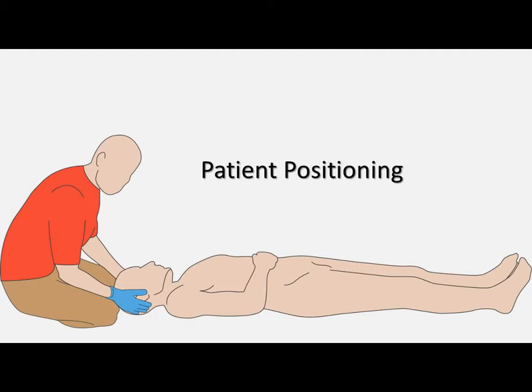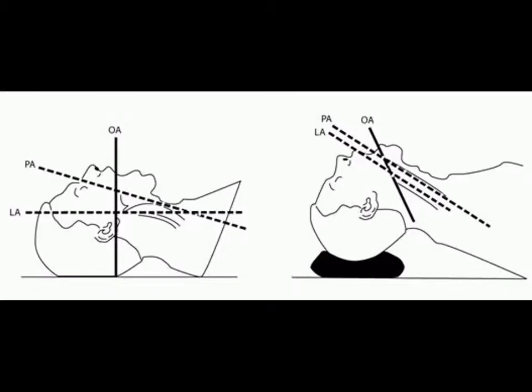We're now going to look at how we can position Millie in order to maximize our chance of success on our first attempt at intubation. Successful intubation is best achieved with good visualization and the best way to optimize visualization is by positioning the patient in a way that best aligns their three airway axes.